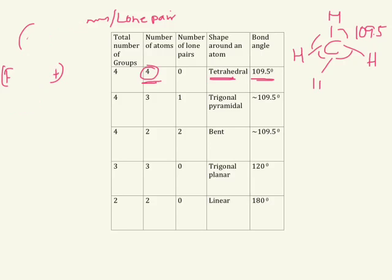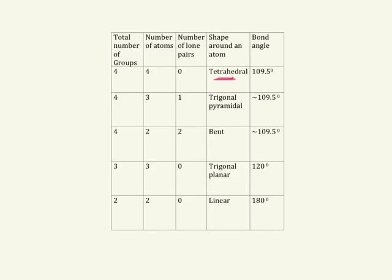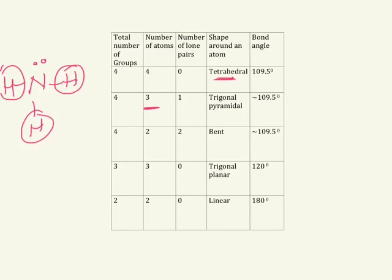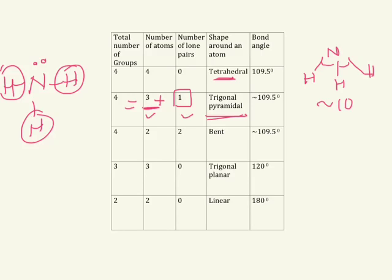Let's take another example — ammonia. I explained the Lewis structure of ammonia in the last video. How many atoms are around the central atom? Nitrogen is the central atom and there are 3 atoms around it. Is there any lone pair on the central atom? Yes, 1. So the number of groups is still 4: 3 plus 1. If there are 4 groups, 3 are atoms and 1 is a lone pair, then the shape is trigonal pyramidal. The bond angles are approximately 109.5 degrees, not exact, but approximately 109.5.